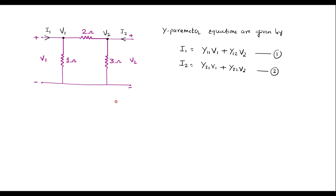Now I will explain how to find y-parameters using a very simple method. We will solve this using node analysis. Here we have a resistor of value 1 ohm. Let the current through this branch be x, and let the current through this branch be y.